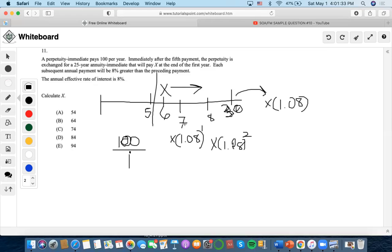All the way until time 30, when it becomes X times 1.08 to what exponent? Well, we see that since 1 is the exponent at time 7 and 2 is the exponent at time 8, there's always a 6 interval difference between the exponent and where the time is at. So 30 minus 6 is 24, right?